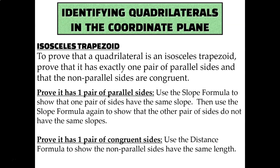And if you want to prove that it's specifically an isosceles trapezoid, you have to do that and show that the non-parallel sides are congruent to each other using the distance formula.